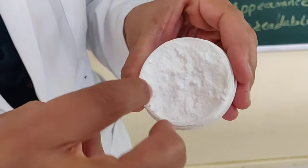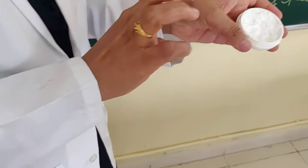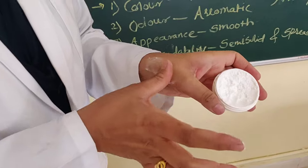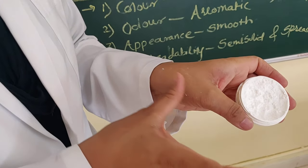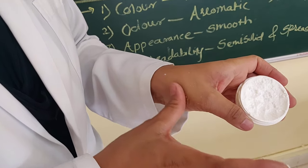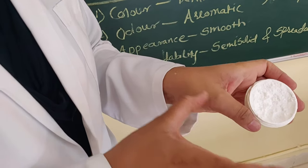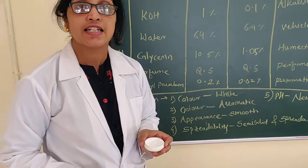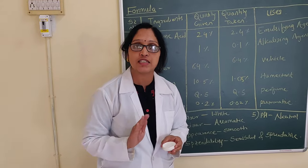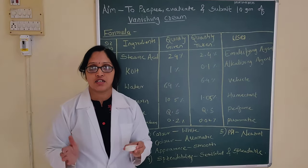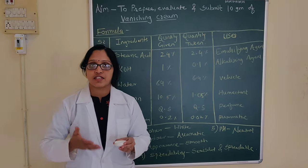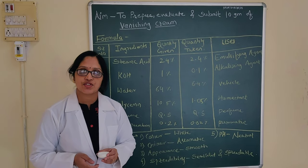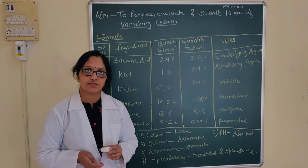Now we can see how it vanishes when applied on the skin. This cream forms a very thin layer on the skin and vanishes immediately when applied. This is why it is known as vanishing cream — it forms a thin, smooth layer on the skin and gives a smooth appearance to the skin. That is all about vanishing cream.